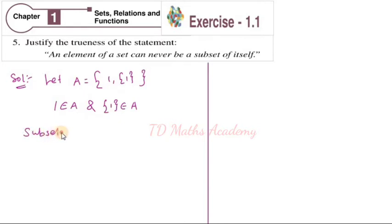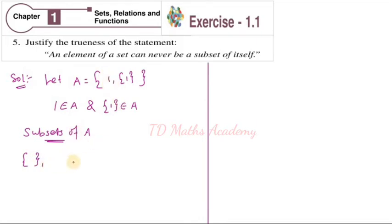Now, subsets of A. We know how to find subsets of A. For every set, the null set is one subset. And this 1 is one subset. How to write subsets — we know very well. Suppose {1, 2} is one set, then the null set is one subset.